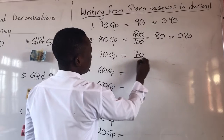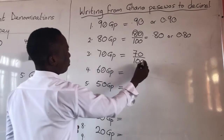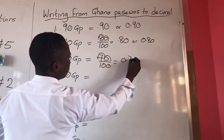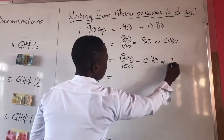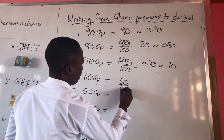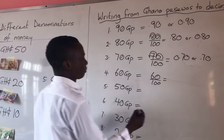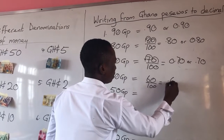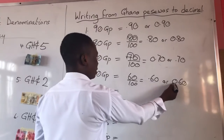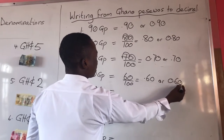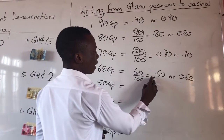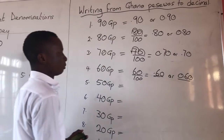We have 70 pesewas. 70 over 100, with 2 decimal places, gives 0.70. Someone will write this as point 70, or 0.70. Then 60 over 100 will give us 0.60. When you write 0.60, it is the same as writing it in this form.